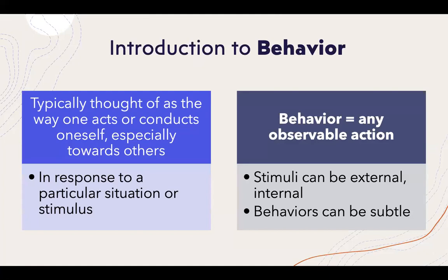Behavior is typically thought of as the way a person acts or conducts themselves, especially towards others, in response to a particular situation or stimulus. My typical definition of behavior is any observable action. It's important to consider that stimuli can be both internal and external. If a child is behaving in a way that's hard to understand, there are often internal stimuli to consider as well. Behaviors can also be very subtle — from overt, very apparent behaviors to slight adjustments in eye contact or subtle movements that can teach us more about what's going on for a child.